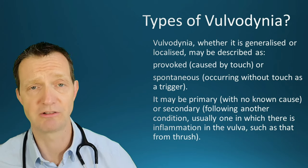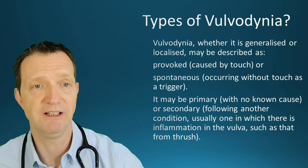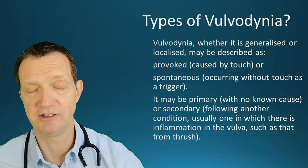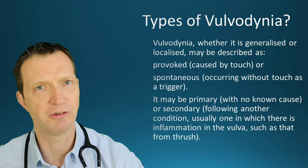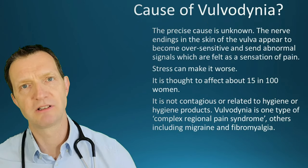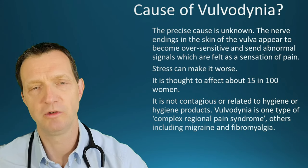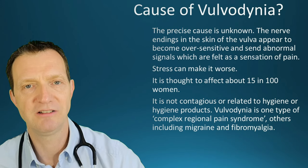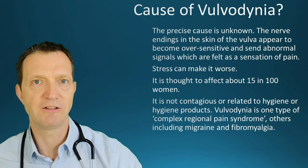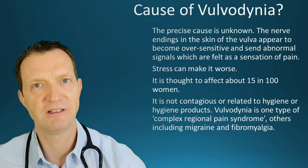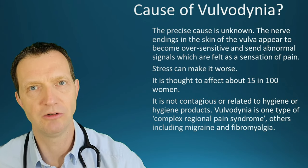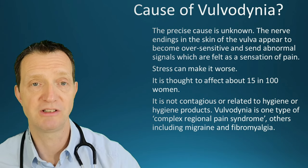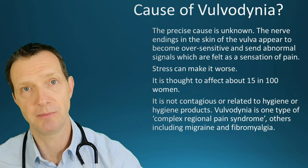Thrush is very common in women, and thrush is not a sexually transmitted infection, just in case you're wondering. The precise cause of vulvodynia is unknown. The nerve endings of the skin of the vulva appear to become over-sensitized and send abnormal signals to the brain, over-interpreting a normal touch sensation as a pain sensation.